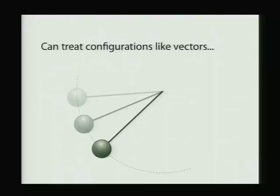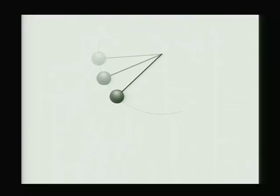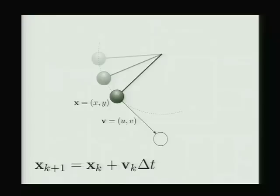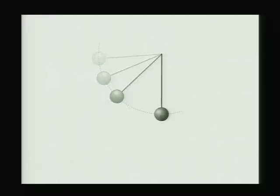And we could pretend momentarily that the configuration space of the system is flat, just use vectors to represent it. But the problem is we're going to end up pushing ourselves off our configuration manifold. And then we have to do some trick like project it onto the closest point on the configuration space to get the right appearance.